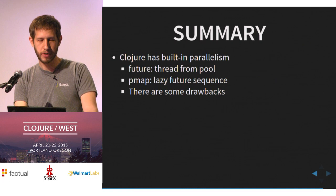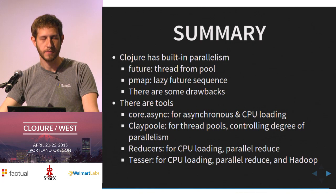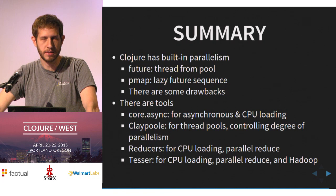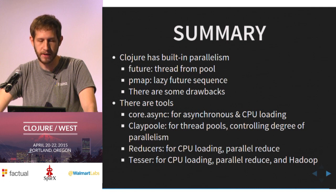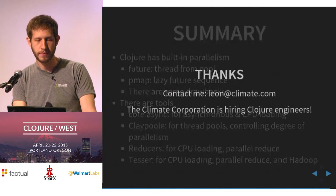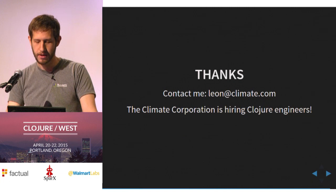In summary, Clojure has built-in parallelism that's quite nice — there are futures using threads from the built-in pool, and PMAP. There are a few drawbacks I talked about; they're not too major, but it's helpful to know what's going on. Among the tools: Core.async is designed for asynchronous processing and CPU loading. Claypool, which I wrote, is designed to let you control very precisely the amount of parallelism and do work as fast as possible. Reducers is designed for CPU loading and parallel reduce, and Tesser for parallel reduce and Hadoop. I'm Leon at the Climate Corporation — we're definitely hiring Clojure engineers, so if you're interested, contact me. Thank you very much.